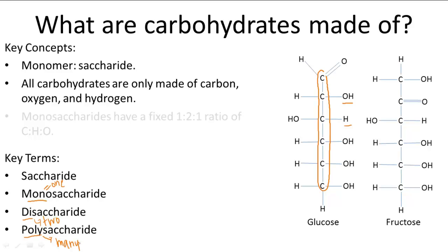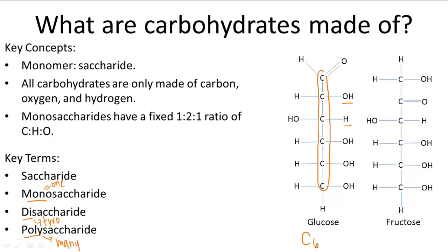A monosaccharide is really easy to recognize in written form if you remember that they always have a 1 to 2 to 1 ratio between carbon, hydrogen, and oxygen. For example, glucose is C6H12O6 — 6 to 12 to 6, which is a 1 to 2 to 1 ratio.